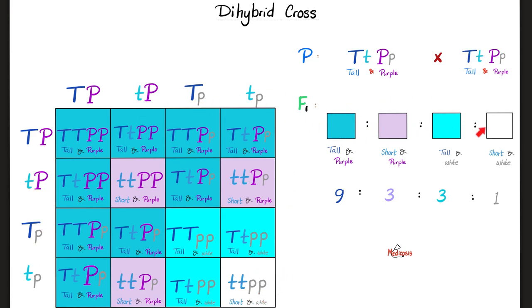So, what's the frequency of the phenotype? 9, tall and purple. To 3, short and purple. To 3, tall and white. To 1, short and white. This is the result of a dihybrid cross.